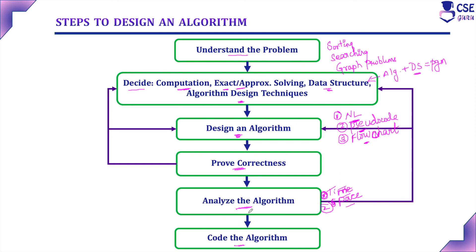The last step is to code the algorithm. If the algorithm is good in all respects and satisfies the above steps, implement it as a computer program in any programming language. Once the program code is developed, check the validity of the program by testing. Execute the program for different inputs and check its output. Test and debug the program thoroughly in all respects. These are all the steps in design and analysis of algorithms. The general rule is: a good algorithm is a result of repeated effort and review. Consider these steps to design an efficient algorithm.